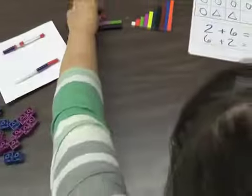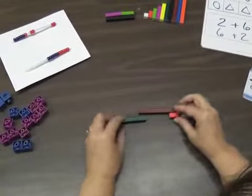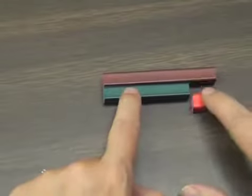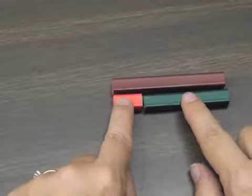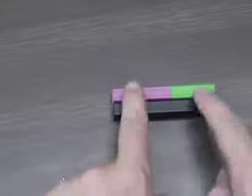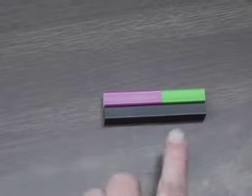We also have that in the Cuisenaire rods. So we have the 6 rod plus the 2 rod. It matches up to the 8 rod. We could think of that as being the turnaround principle too. Have the 2 come first. So 2 plus 6 equals 8. And even showing a model of the 4 plus 3 equaling the 7. So 4 plus 3 equaling the 7. We can show that that's true.